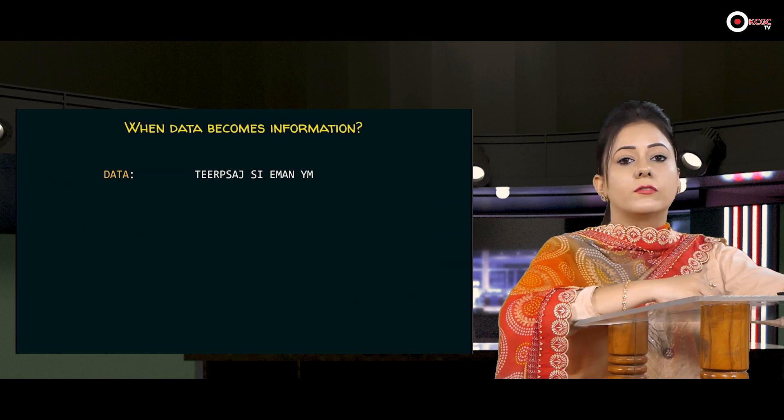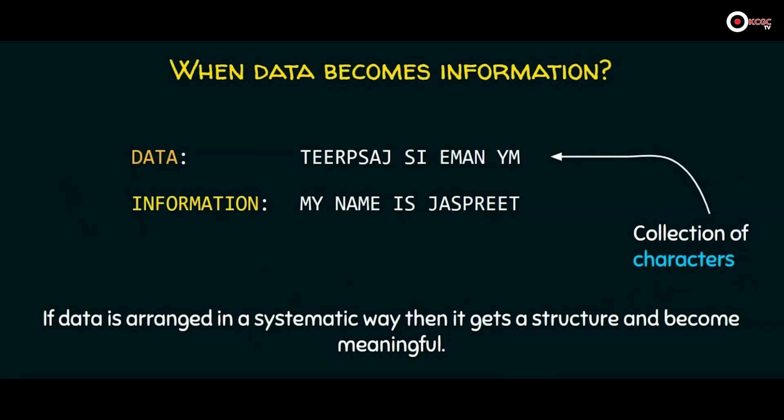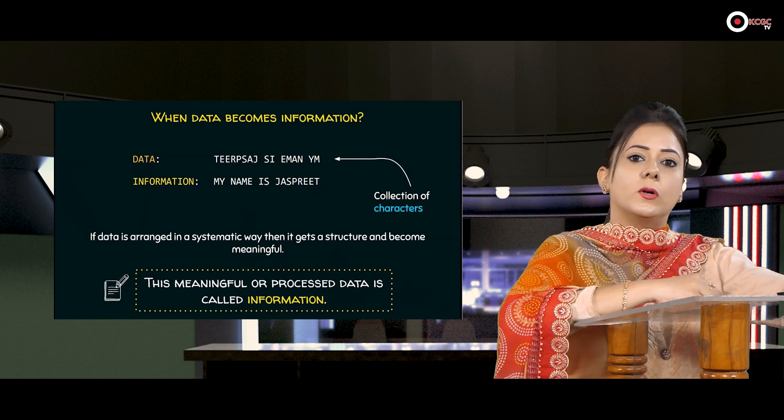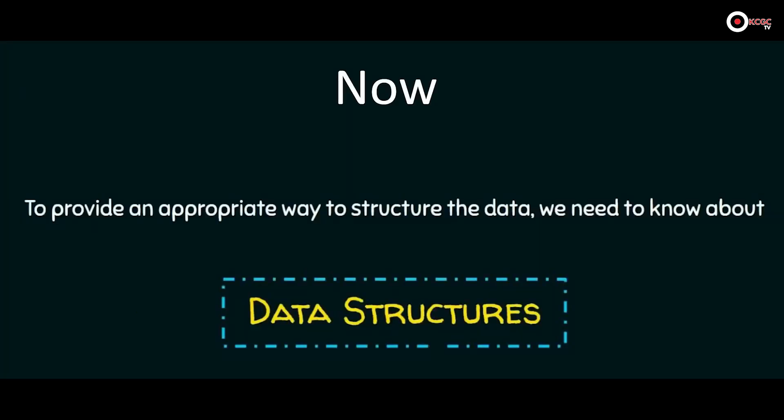Now the question is: when does data become information? Consider a collection of characters — it doesn't have any meaning on its own. But if we reverse this string, we get a meaningful result: 'My name is Jasprey.' This string is now giving us some information. So if data is arranged in a systematic way, it gets a structure and becomes meaningful. This meaningful or processed data is called information. To provide an appropriate way to structure the data, we need to know about data structures.